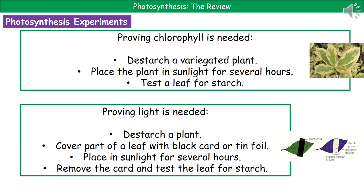To prove that chlorophyll is required for photosynthesis, start by de-starching a variegated plant — one that has chlorophyll in some areas but not all. Put it in a dark cupboard for 24 hours or more, then place it in sunlight for several hours, and then go through the process of testing the leaf for starch. In theory, you'll find that only in the green parts — the bits that have chlorophyll present — will starch actually be made.